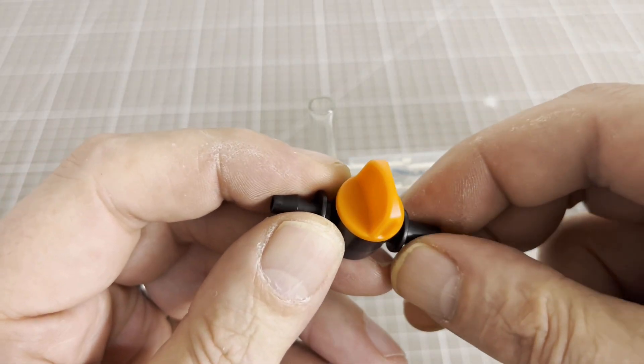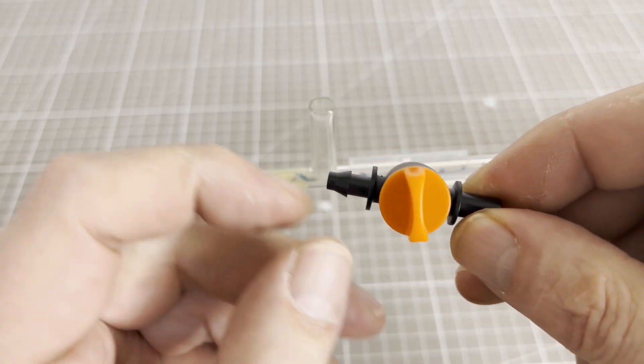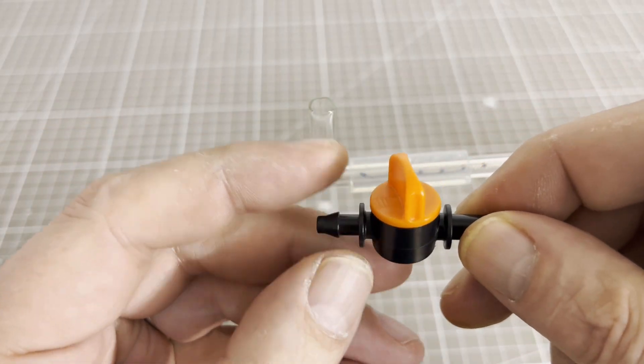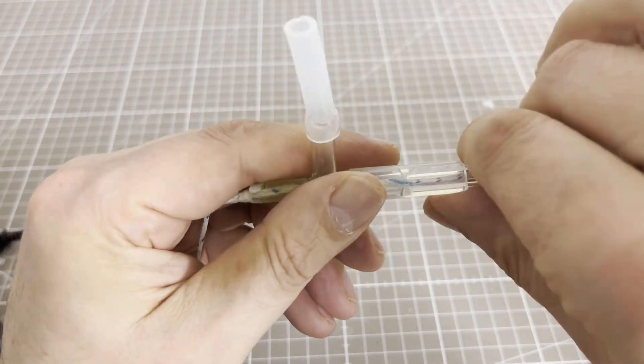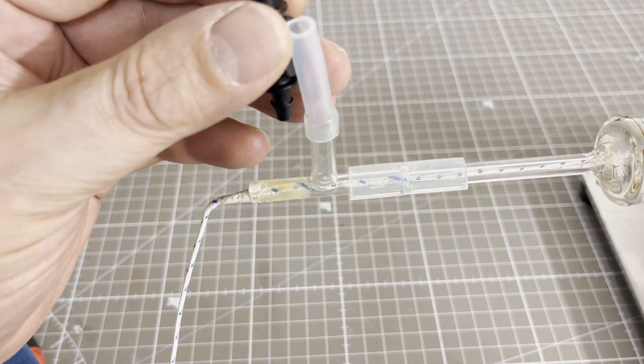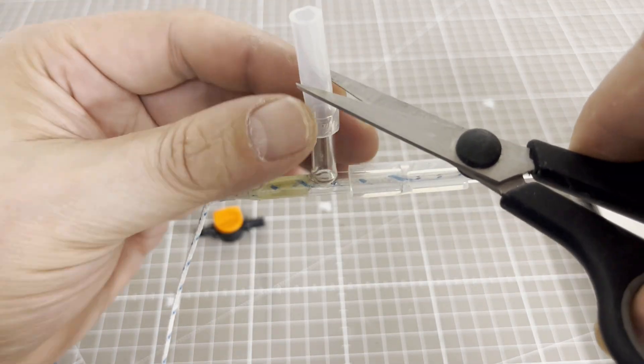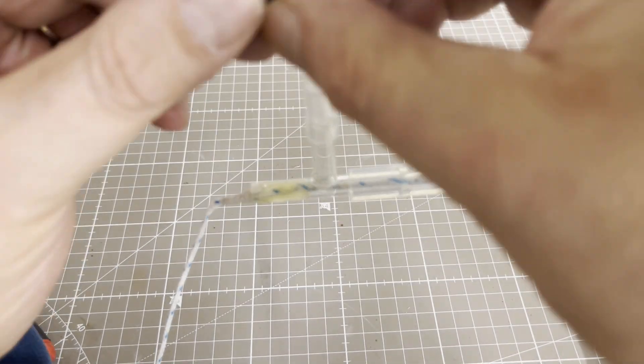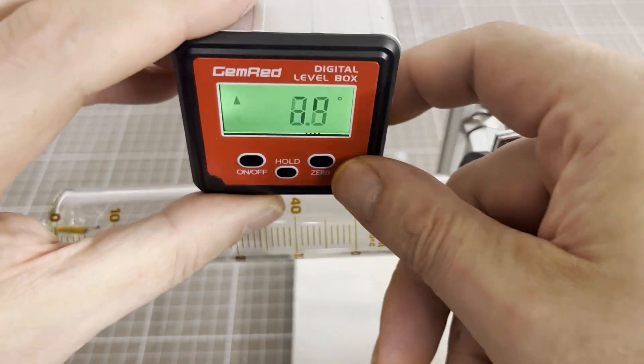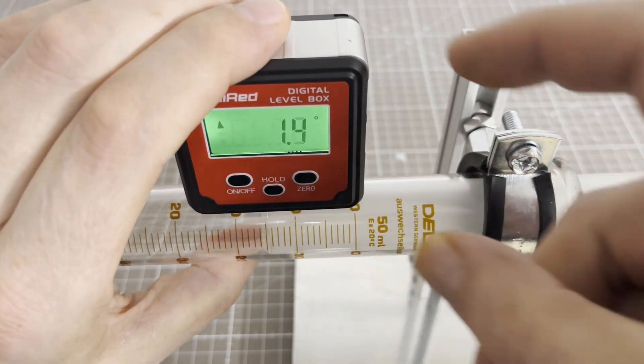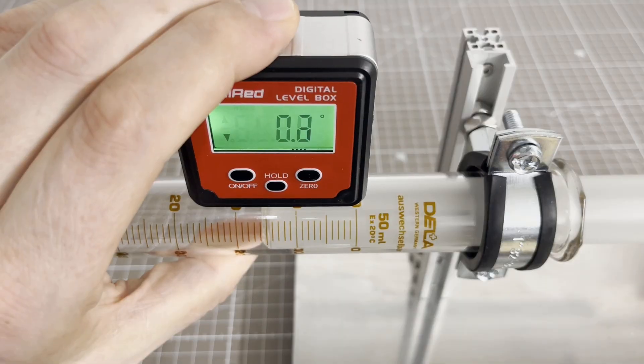Now a stopcock was needed. I used a stopcock that is normally intended for irrigation systems for plants. These are available cheaply from Amazon in packs of 50 pieces. Before the apparatus could be put into operation, I aligned the gas syringe with a digital inclinometer.